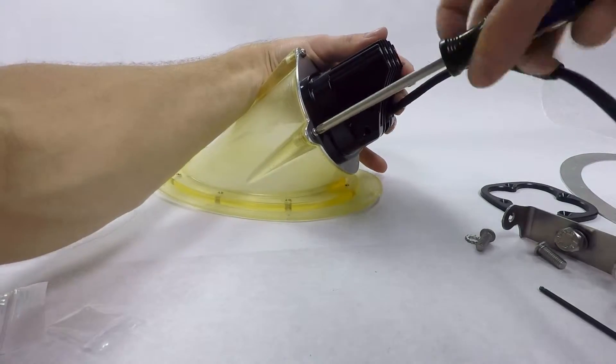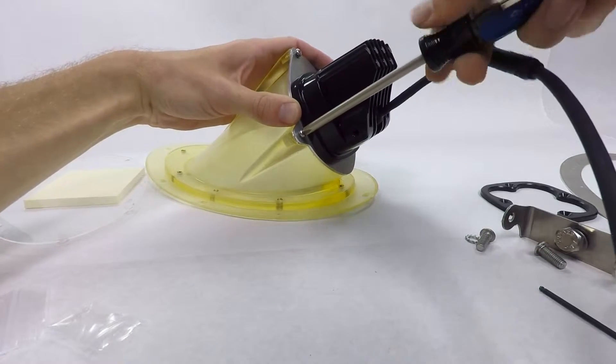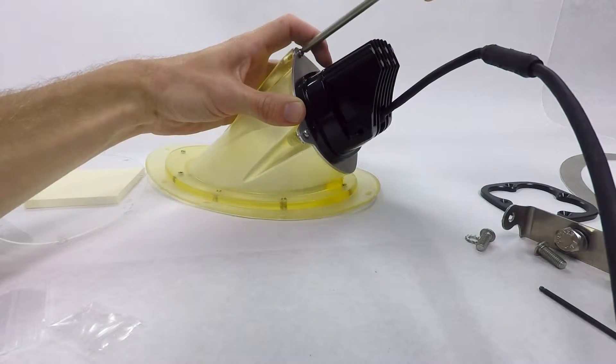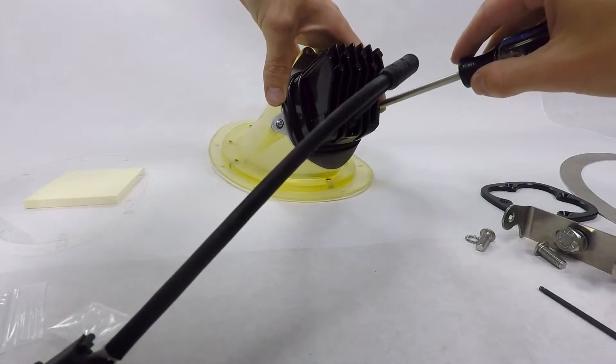Don't over tighten these. You really just need to run them until they're snug and the lock washer collapses down. If you really bear down on these you may pull the threaded insert out of the urethane housing here.